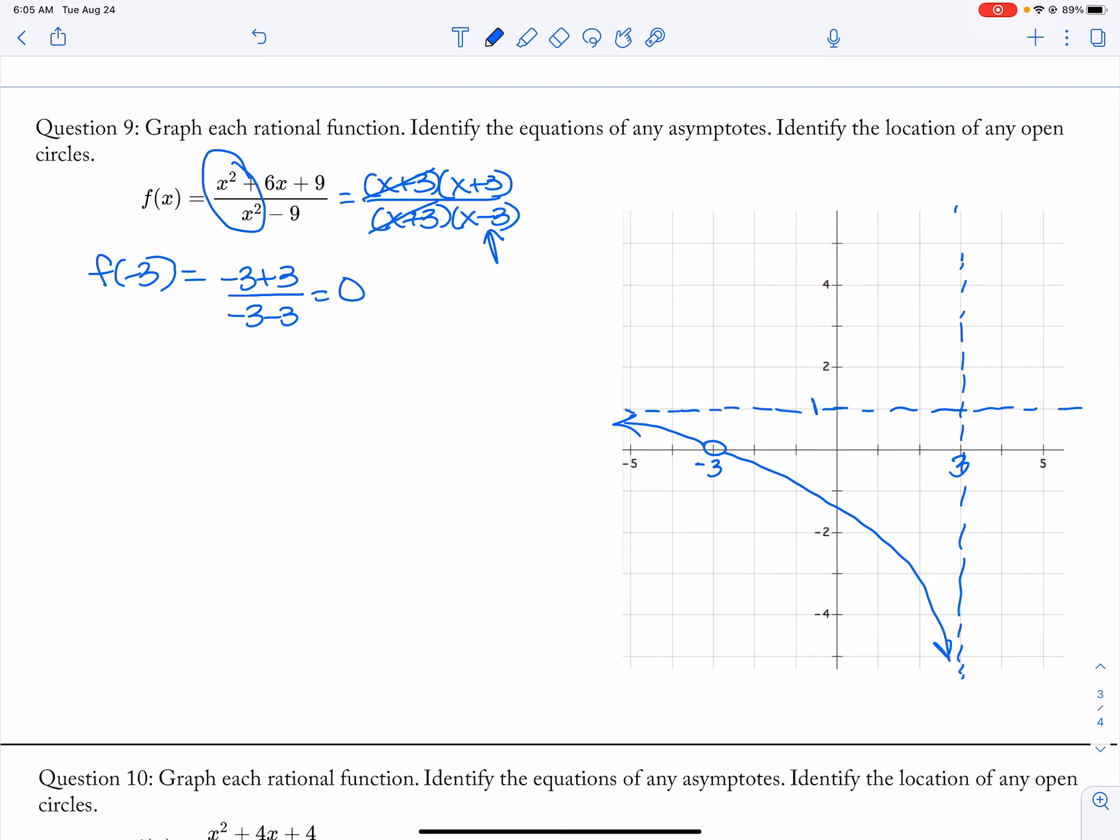And then I pick like 4. So when I pick 4, I have 4 plus 3 over 4 minus 3, which is 7. So I found f of 4, in case you guys are wondering. And then, let's see. So then I'm kind of somewhere like this.